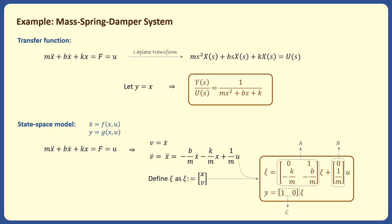This equation is called the state equation. We can write another equation, which is called the output equation, as y equals C psi, where C is a row vector of 1 and 0.